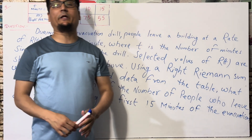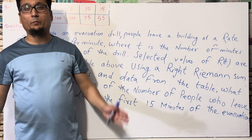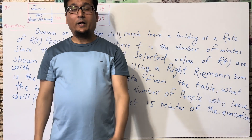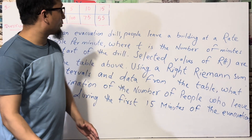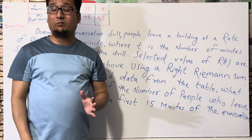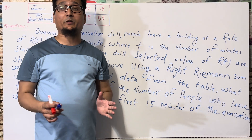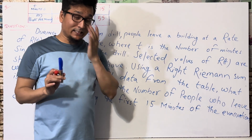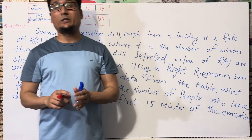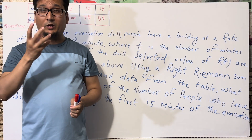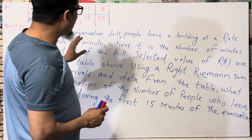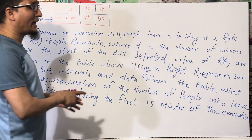Assalamualaikum. Bismillahirrahmanirrahim - in the name of Allah, the most beneficial and the most merciful. Guys, again I'm going to solve question number five of AP Calculus past paper 2018. This question is very complicated and this is a theoretical type of question, so I'm going to explain it and then tell you the short trick on how to solve such questions.